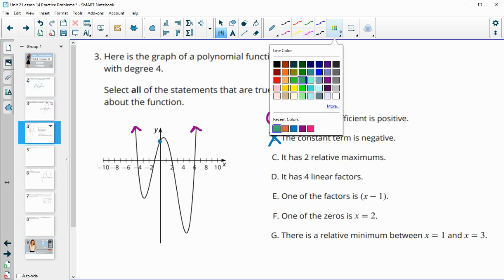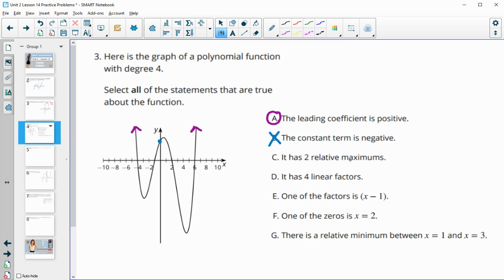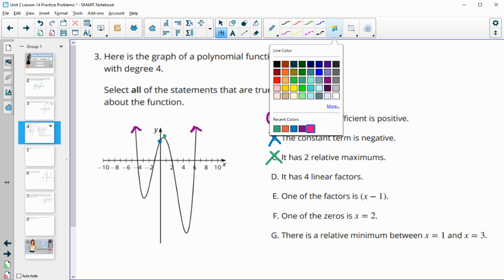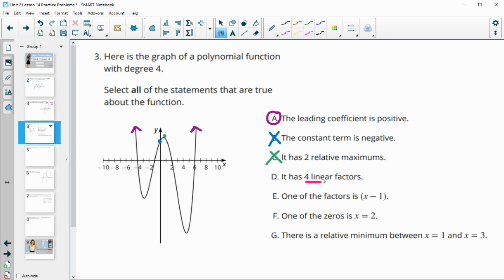It has two relative maximums—it only has one maximum here, so it does not have two. It has four linear factors—this would match the number of zeros. Let's count: 1, 2, 3, 4 zeros, so it has four linear factors.